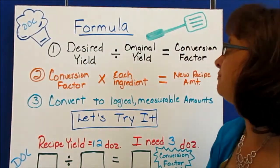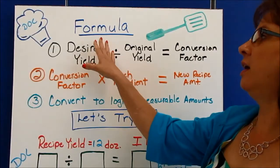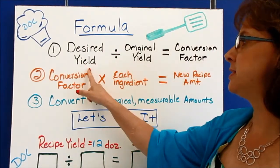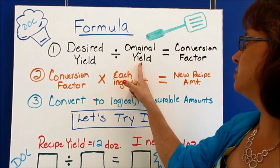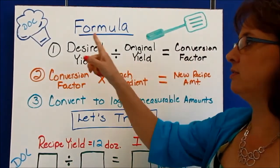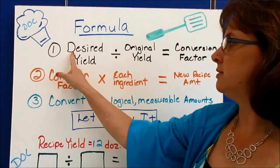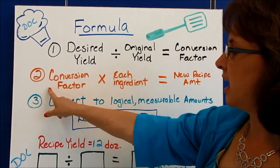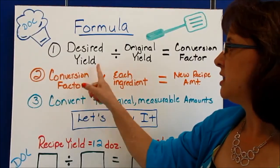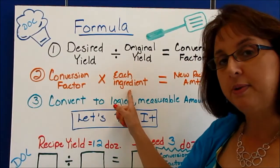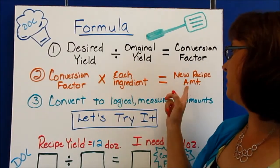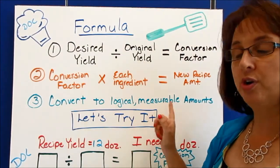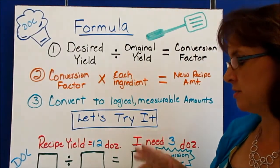One more time: our formula for increasing or decreasing a recipe is desired yield divided by original yield equals conversion factor — DOC. The second thing we do is take our conversion factor and multiply each ingredient in the recipe to make the new recipe amount. Then we convert it to a logical, measurable amount.